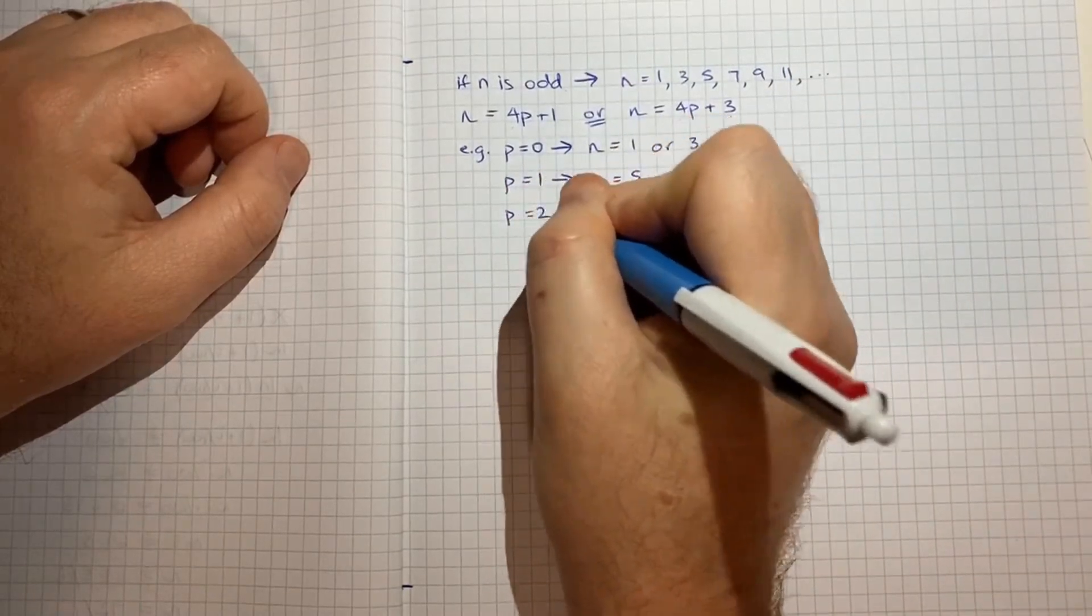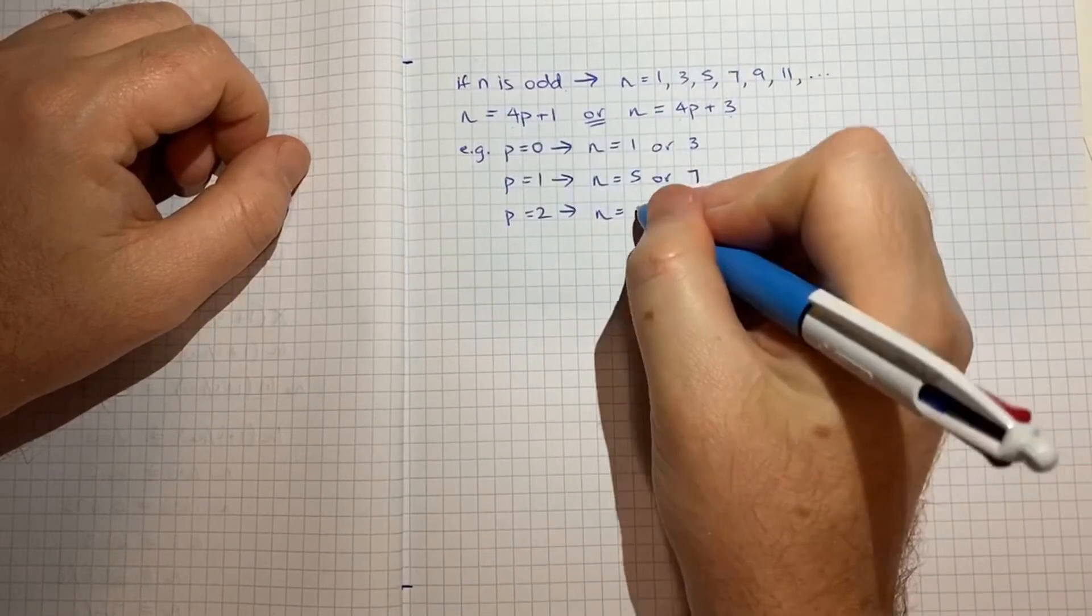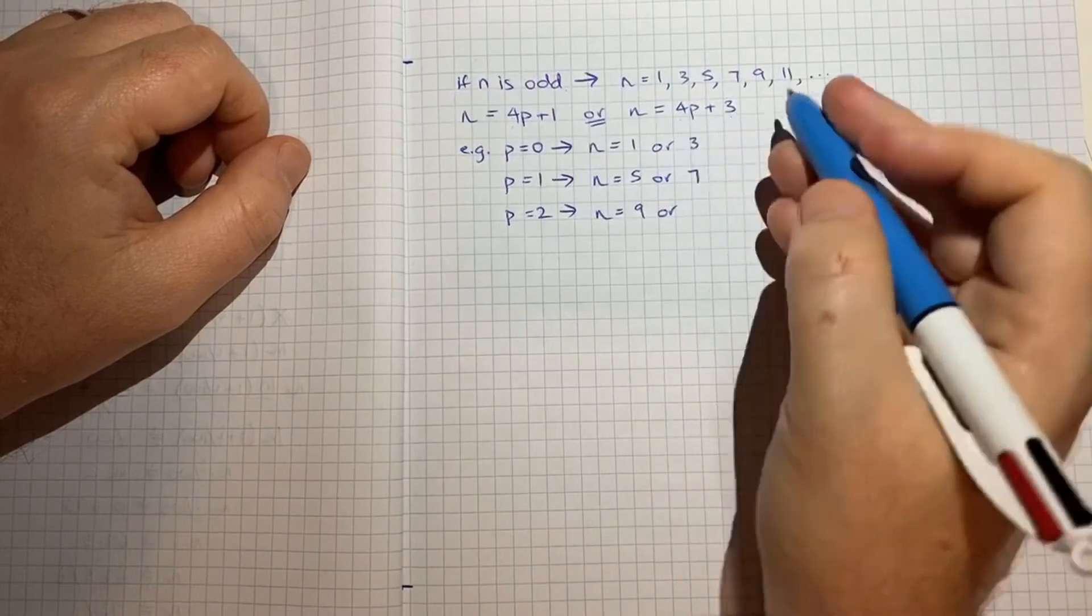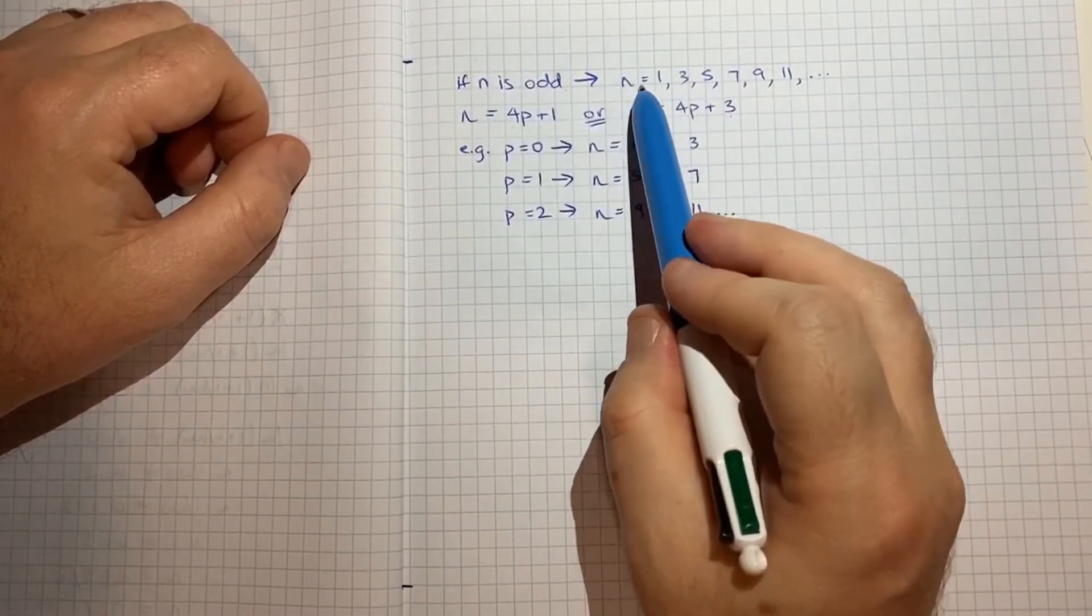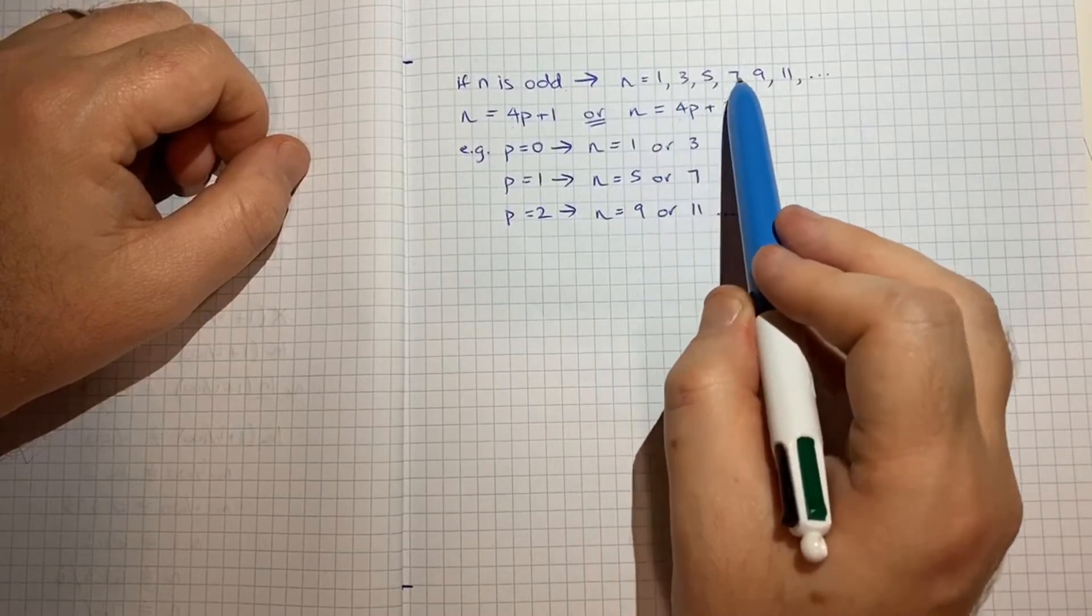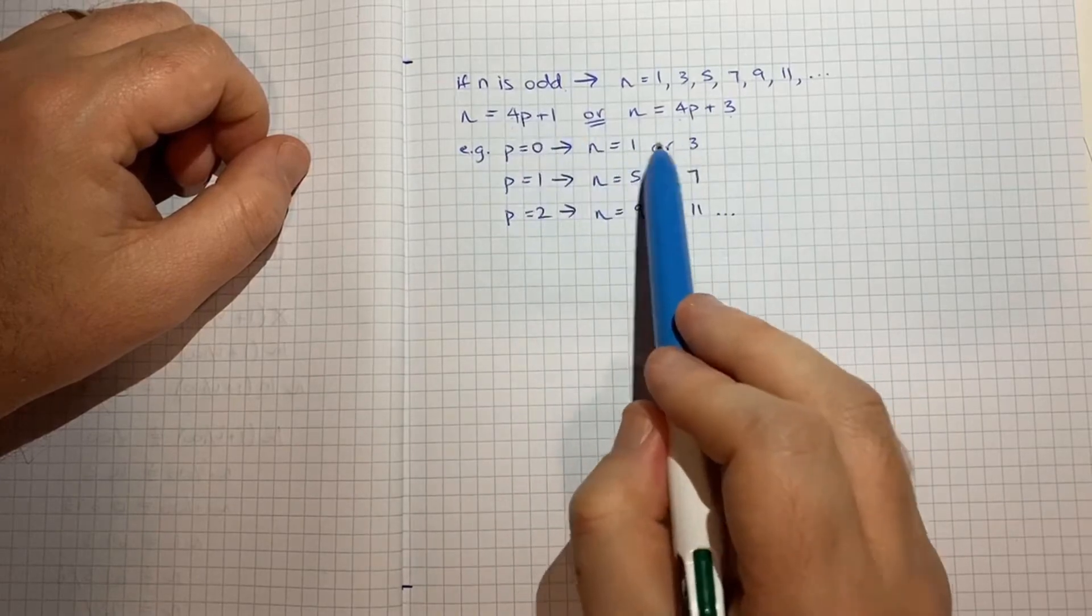If p was equal to 2 we'd get n is equal to 4 times 2 is 8 plus 1 is 9 or 8 plus 3 is 11. And hopefully you get the idea that this series of odd numbers 1, 3, 5, 7, 9, 11 you get with these two functions.